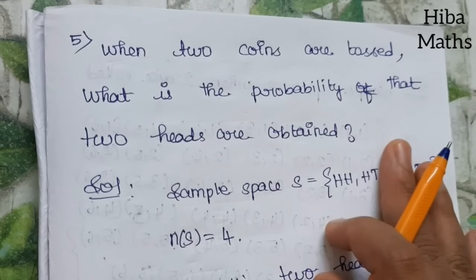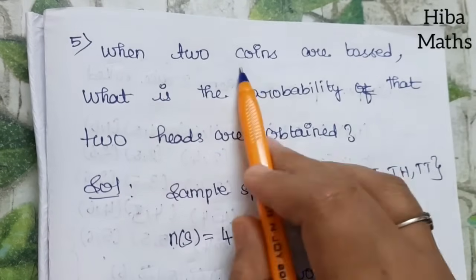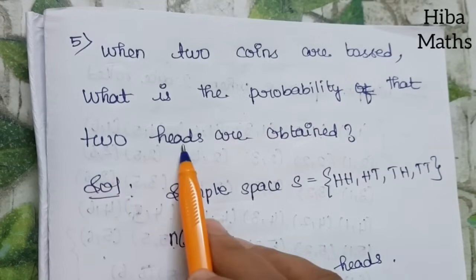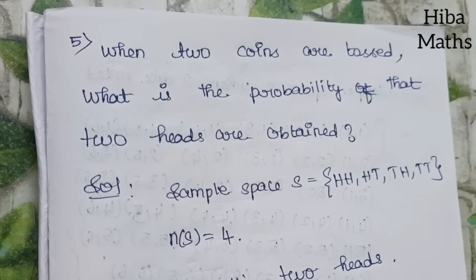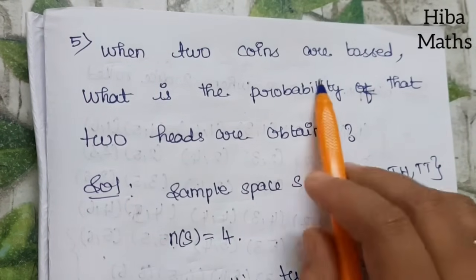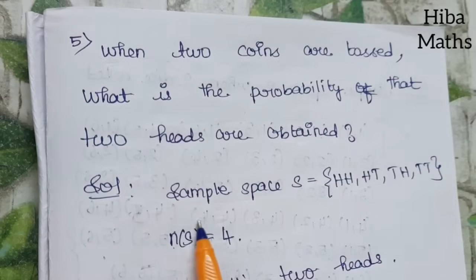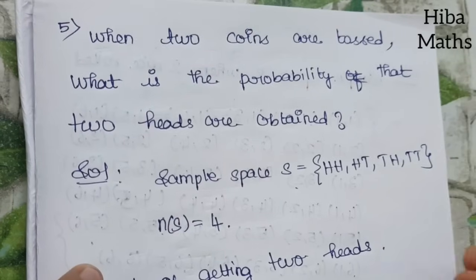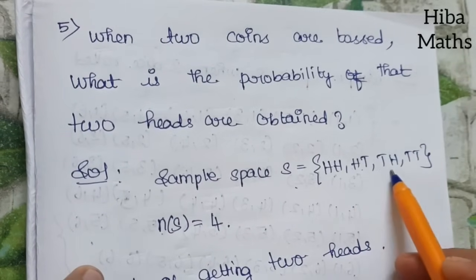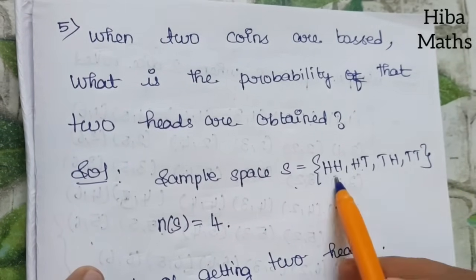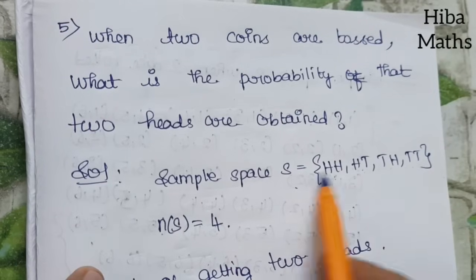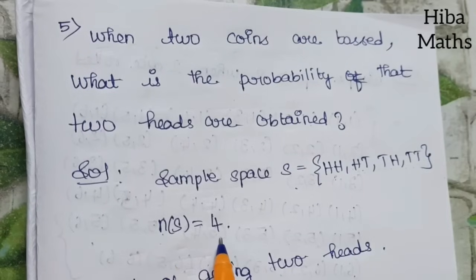Fifth question: when two coins are tossed, what is the probability that two heads are obtained? The sample space S equals {HH, HT, TH, TT}, so n of S equals 4.